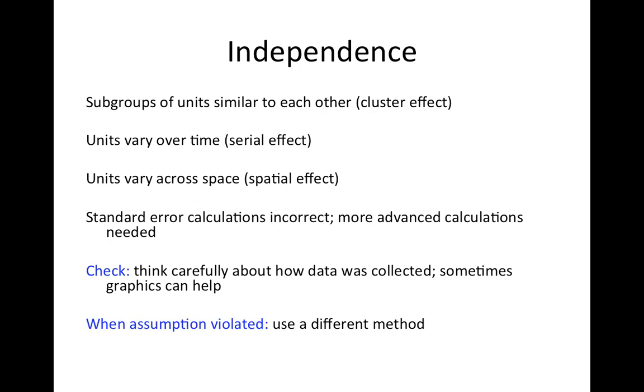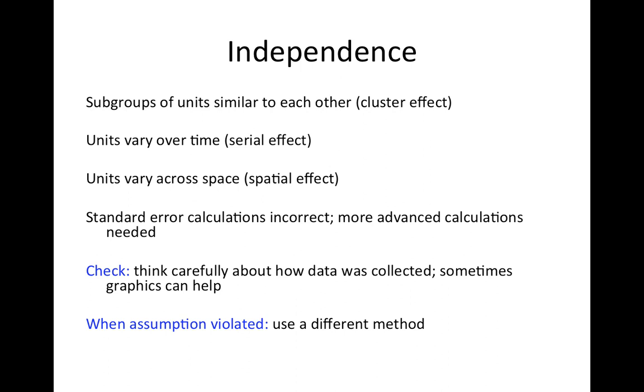And when the assumption of independence is violated, what do you do? You use a different method with standard errors that are calculated in a better way. So I said that you can check for independence graphically sometimes. Suppose that you know that your data came in two batches, batch one and batch two, and you're wondering if you have some kind of clustering effect.